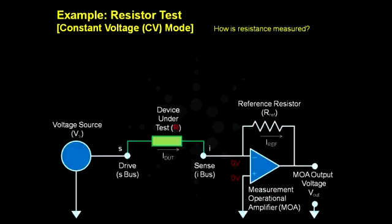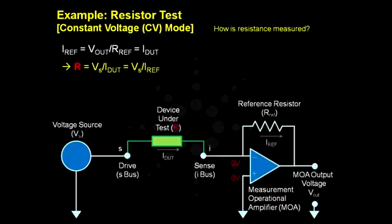Since I-ref equals I-DUT, if we measure Vout, we can find that I-DUT equals Vout over R-ref. Using Ohm's law, the resistance can be calculated by Vs over I-DUT.